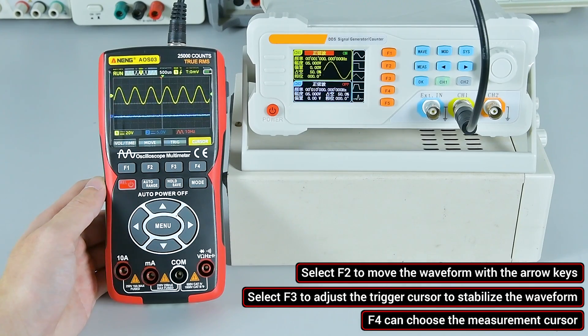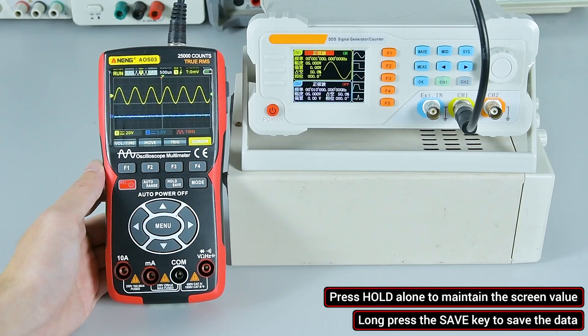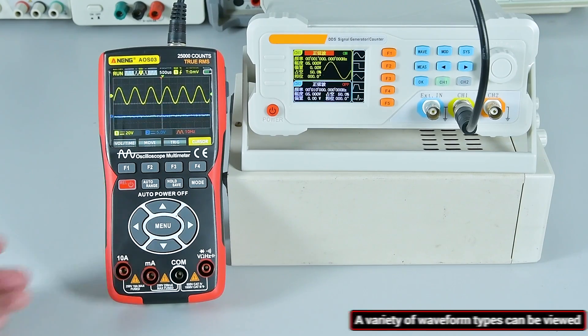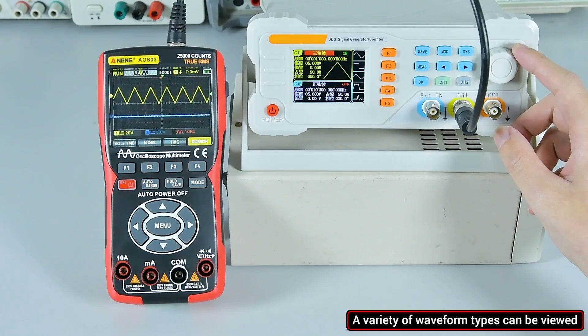F4 can choose the measurement cursor. Press hold alone to maintain the screen value. Long press the save key to save the data. A variety of waveform types can be viewed.